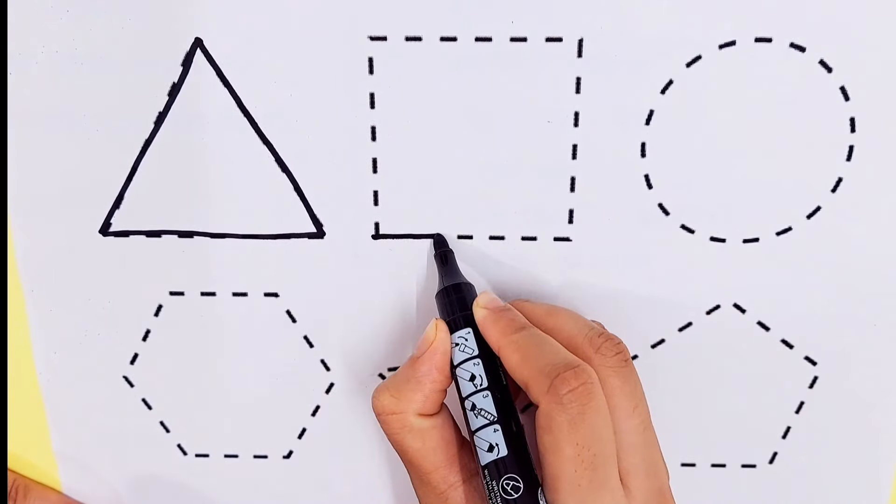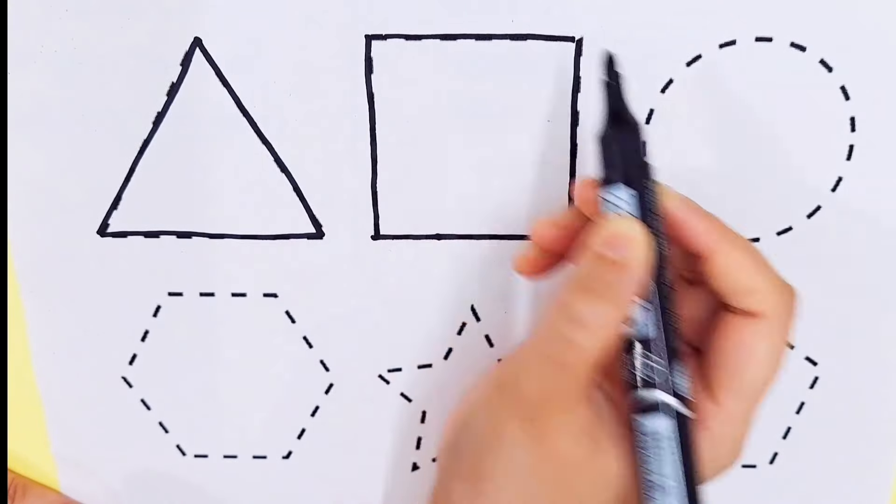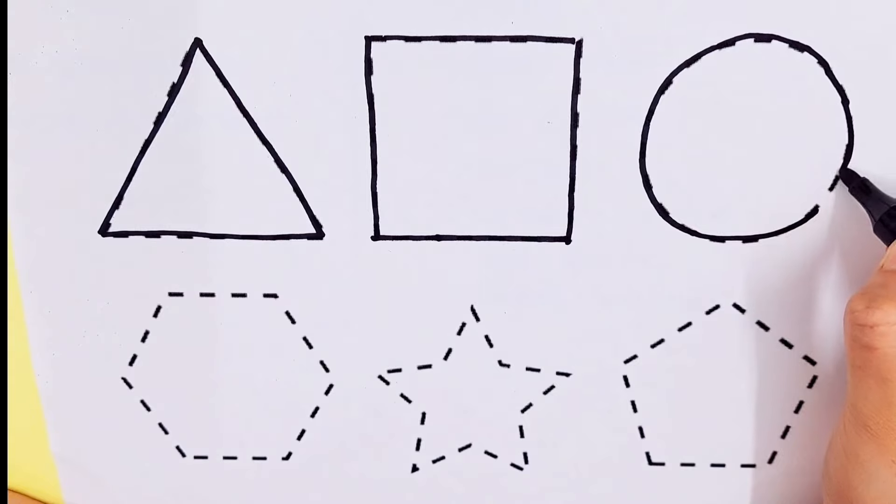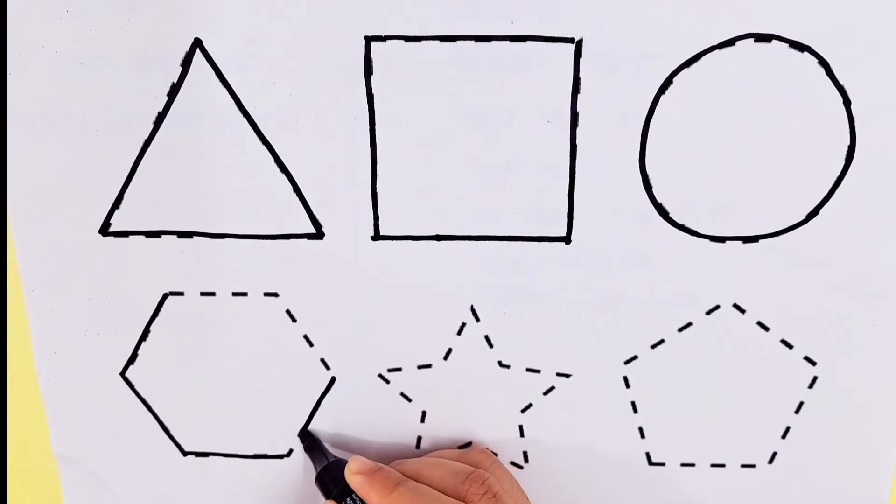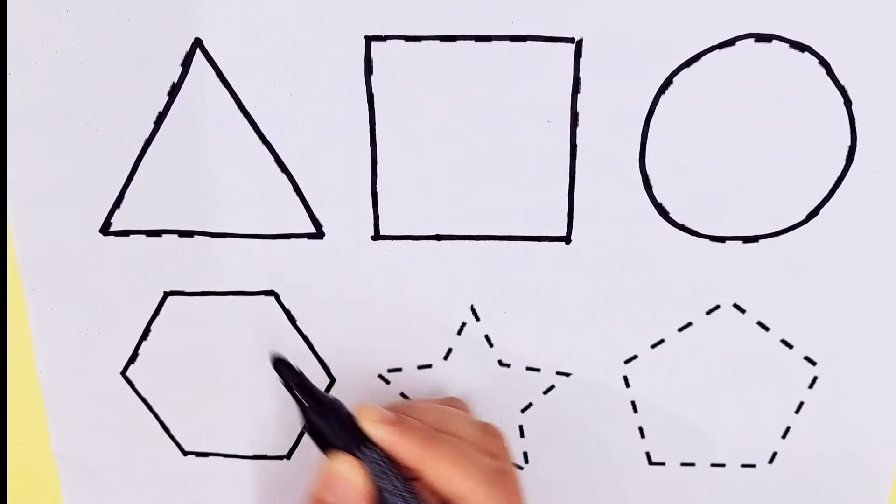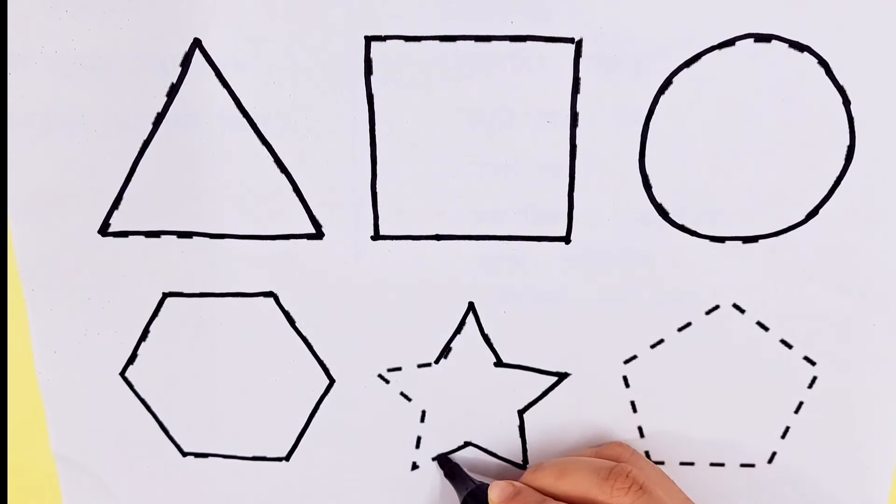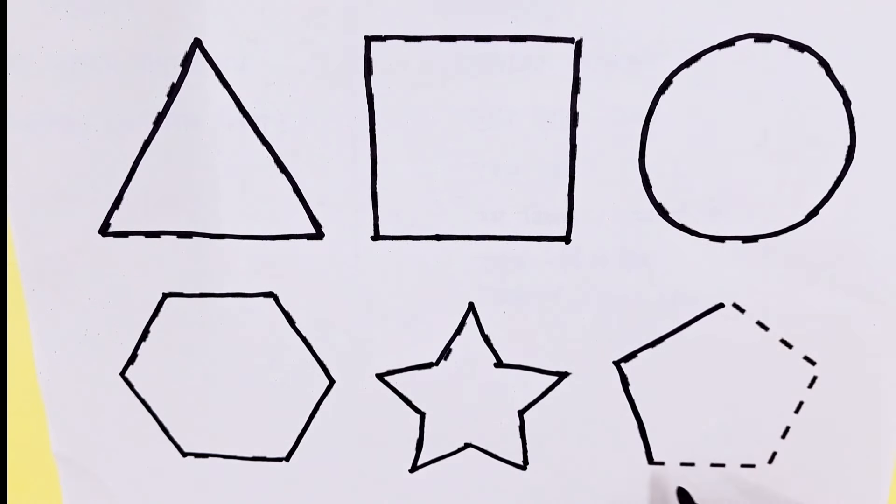Triangle. Square. Circle. Hexagon. Star. Pentagon. Triangle, square, circle, hexagon, star, pentagon.